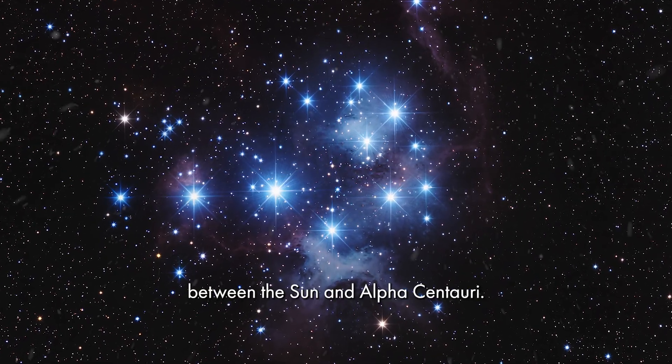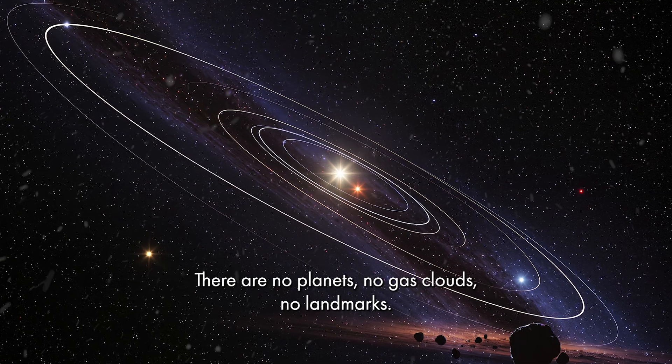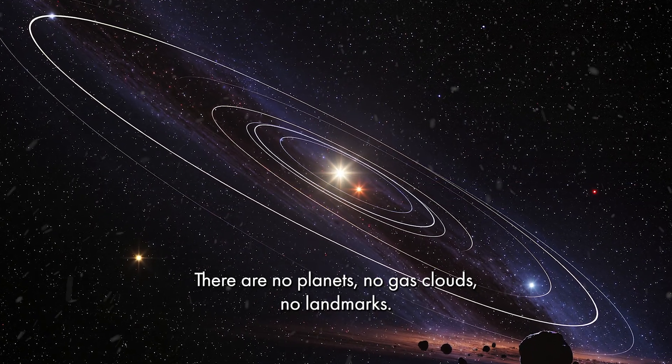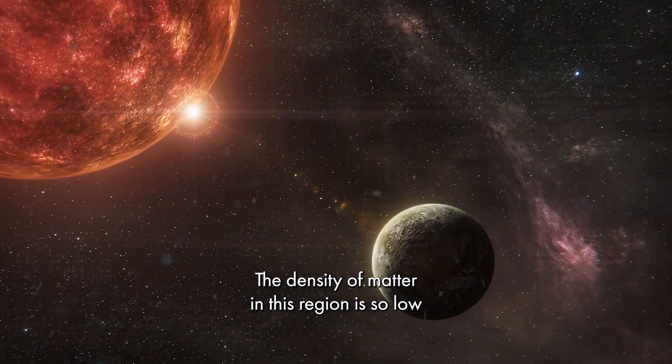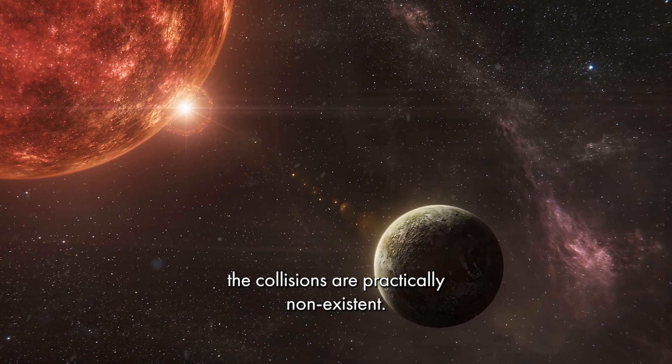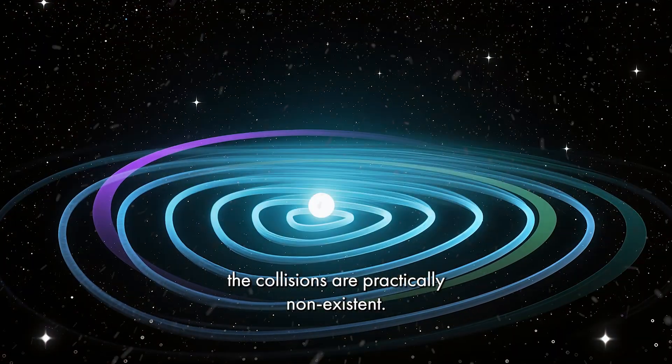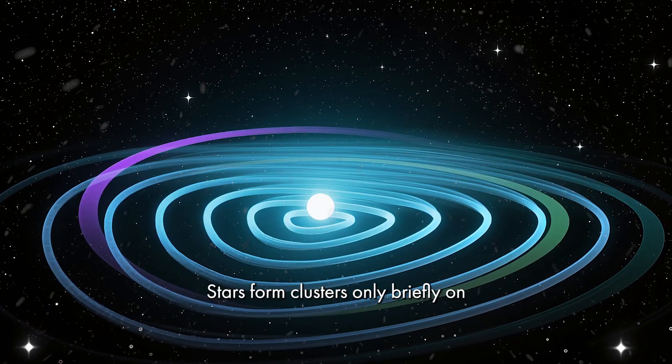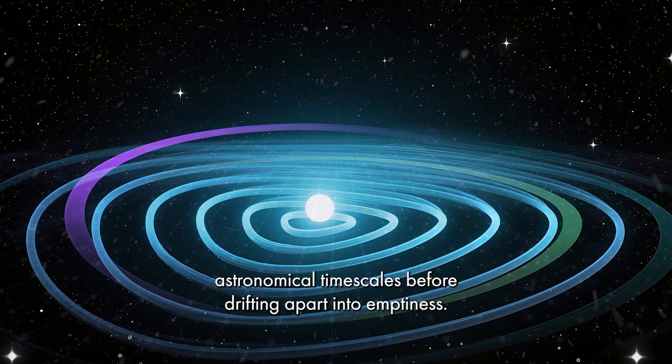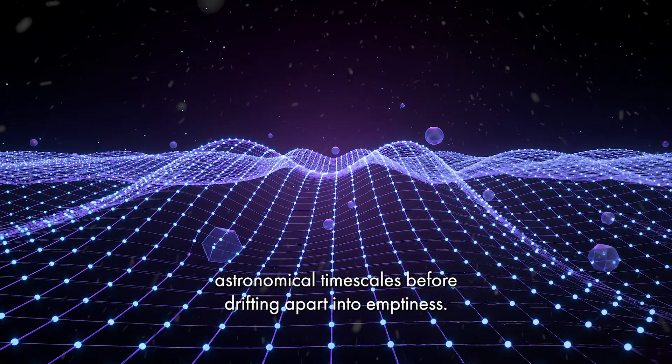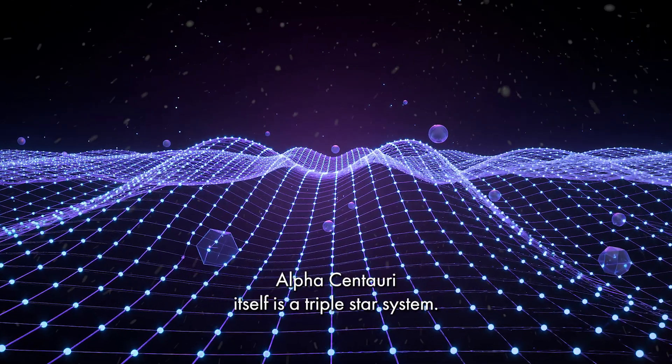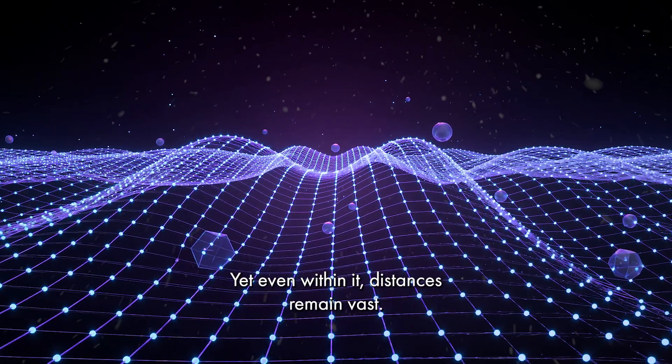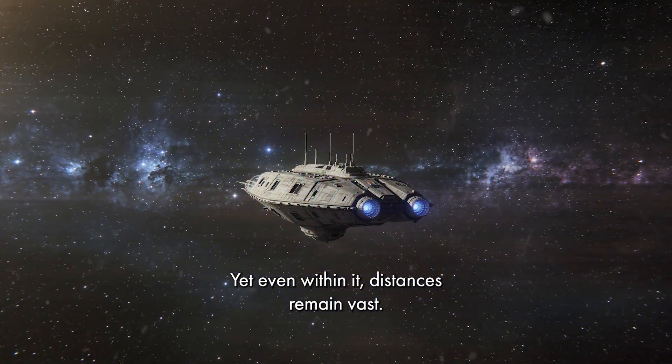Between the Sun and Alpha Centauri, there are no planets, no gas clouds, no landmarks. The density of matter in this region is so low that collisions are practically non-existent. Stars form clusters only briefly on astronomical timescales before drifting apart into emptiness. Alpha Centauri itself is a triple star system, yet even within it, distances remain vast.